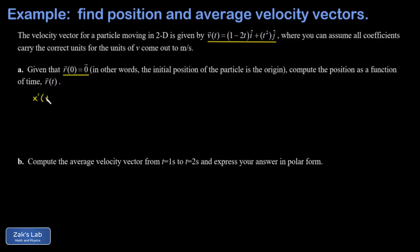So x prime is that 1 minus 2t. Then all we have to do is find the anti-derivative of that and we'll have the x position as a function of time. So we find the anti-derivative and that's t minus t squared.